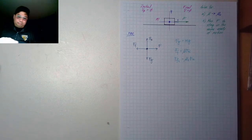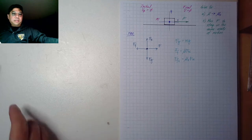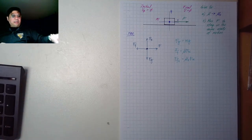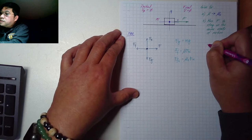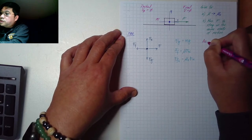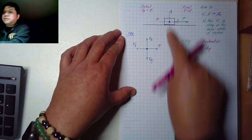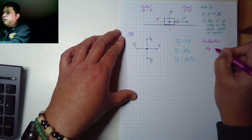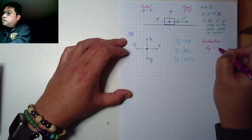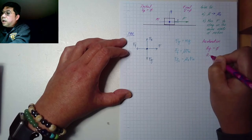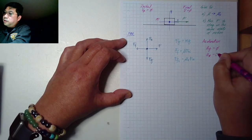We also know there is no change in state of motion, so the acceleration along the x-axis is zero. The acceleration along the y-axis is also zero because the block is not moving up or down at all. We started at zero velocity and we end at zero velocity.